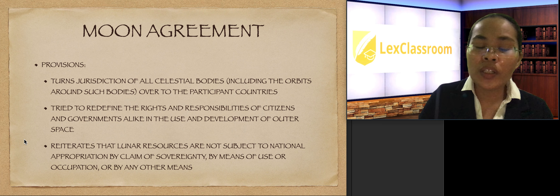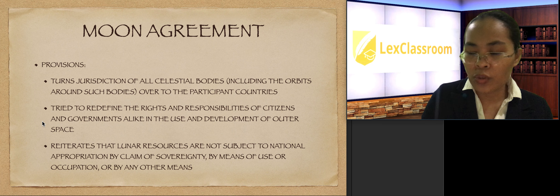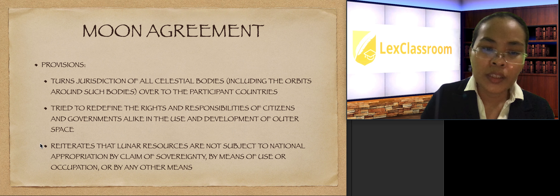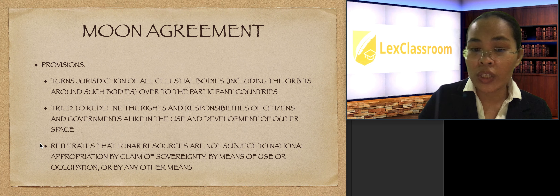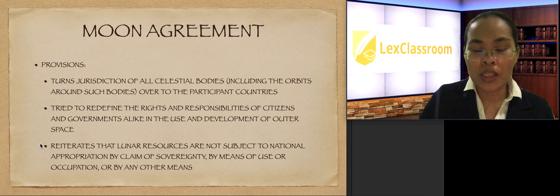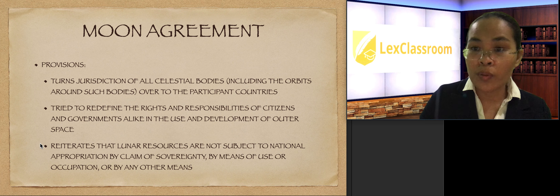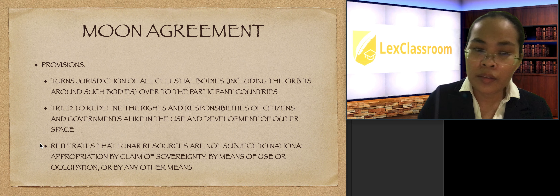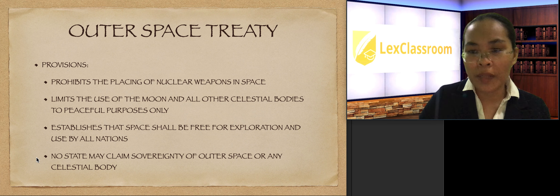The Moon Agreement tried to redefine the rights and responsibilities of citizens and governments in the use and development of outer space. As America claims to have landed on the Moon and sent astronauts there, the Moon Agreement reiterated and emphasized that lunar resources are not subject to national appropriation by claim of sovereignty, by means of use or occupation, or by any other means. In public international law there are many ways of claiming sovereignty — occupation, use, possession — but the Moon Agreement excludes these principles. This is closely related to the Outer Space Treaty.